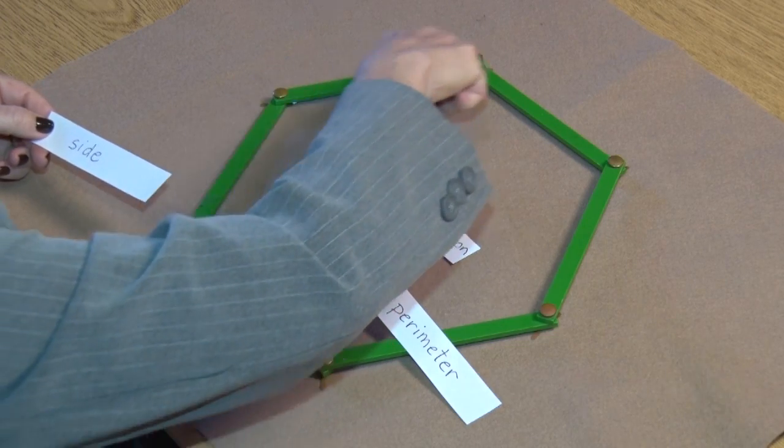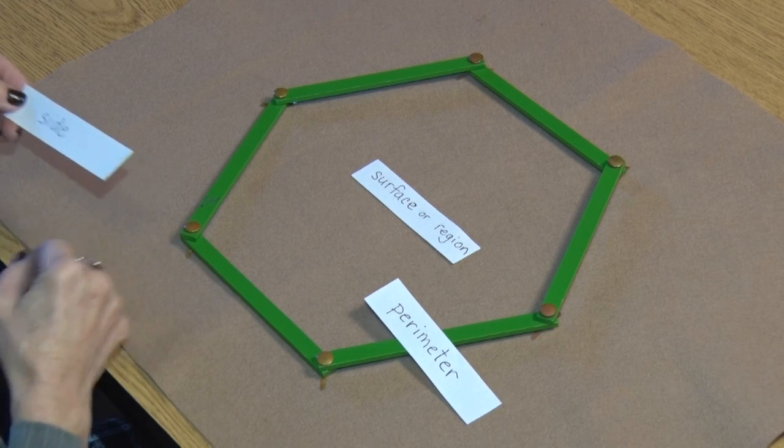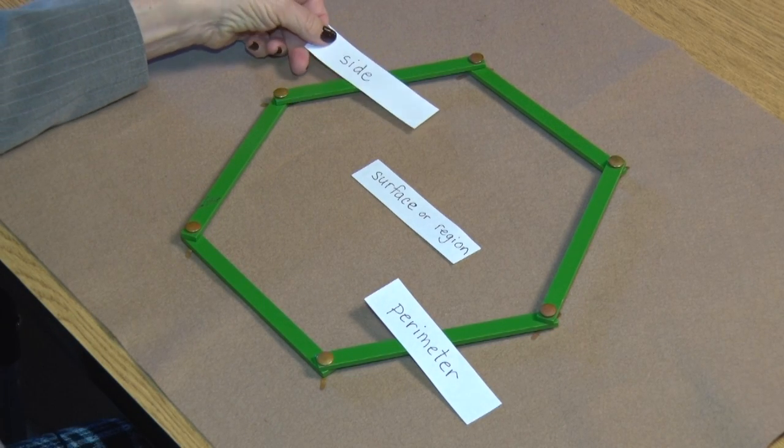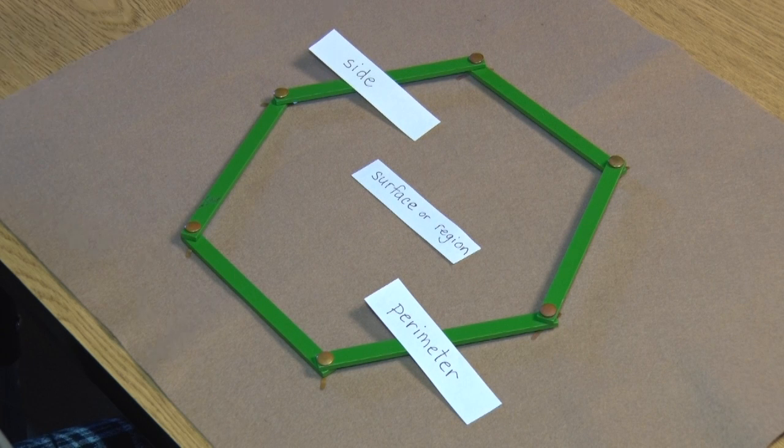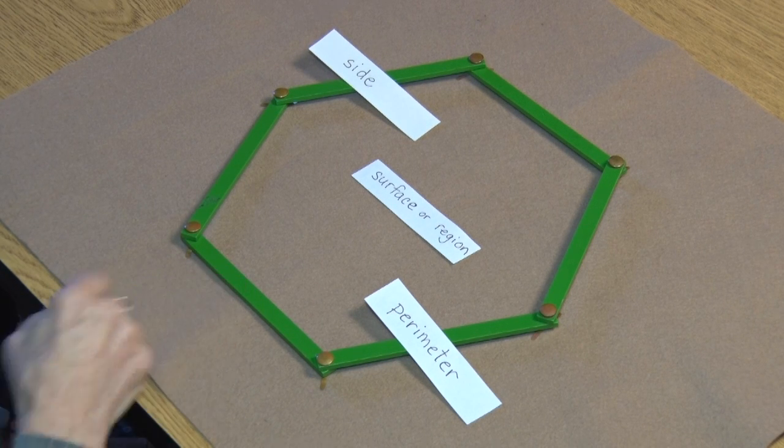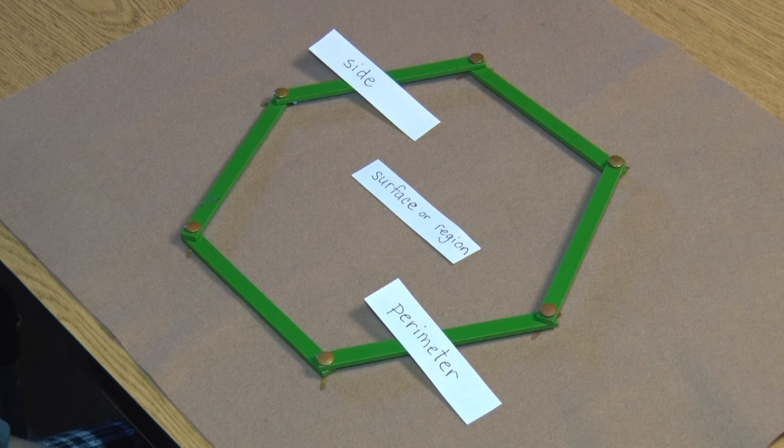Any one of these green sticks represents a side. So a regular polygon has a certain number of sides. A regular hexagon has six sides. All of them are equal.